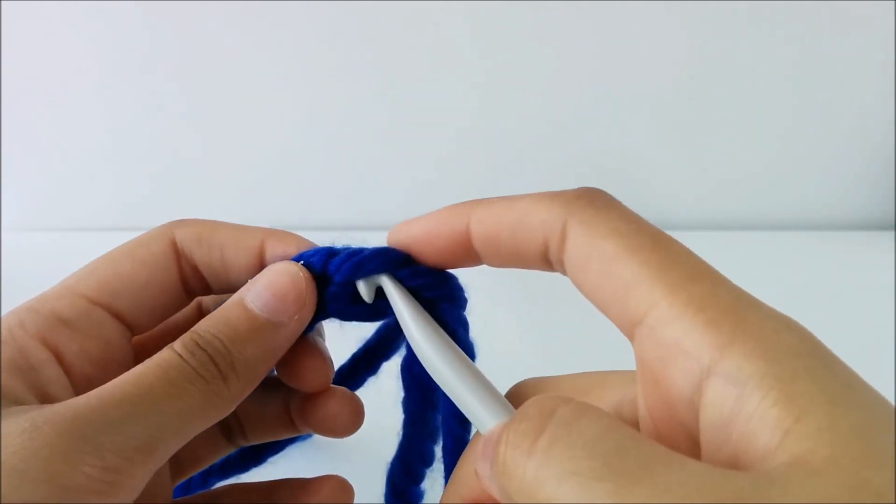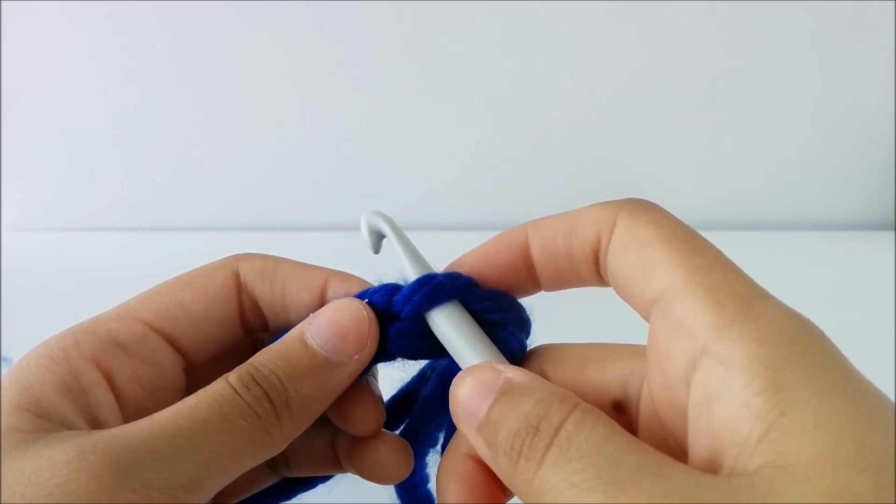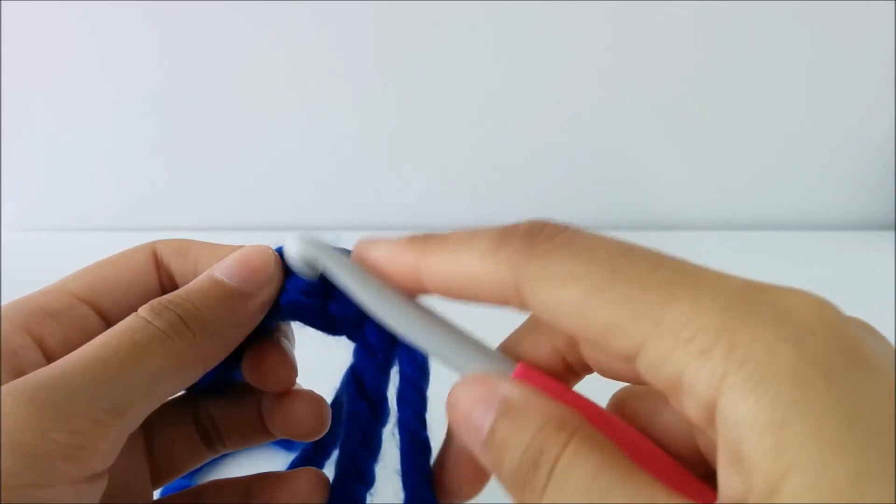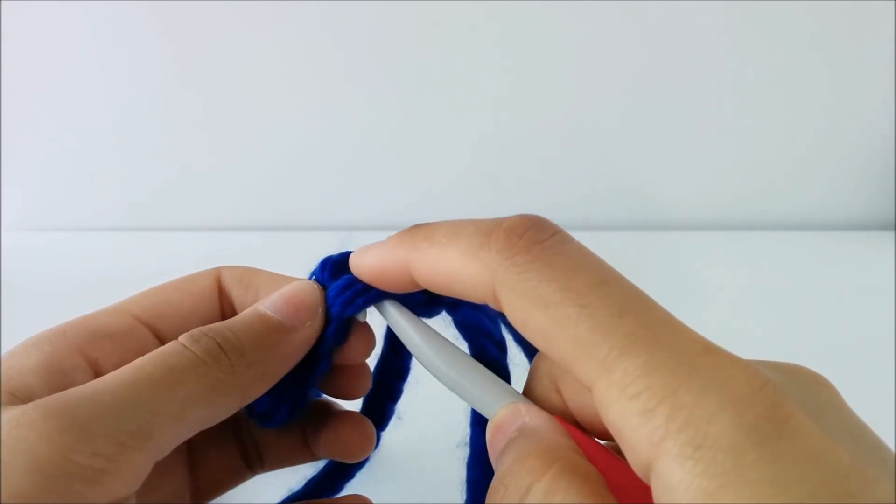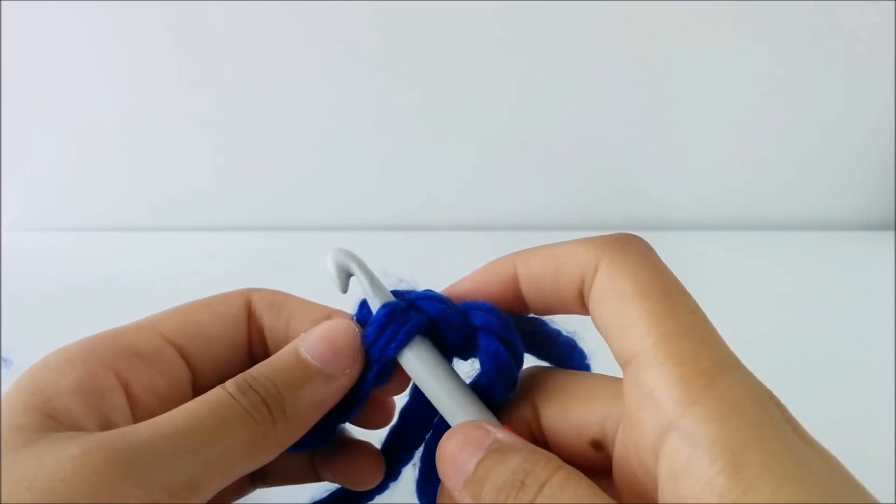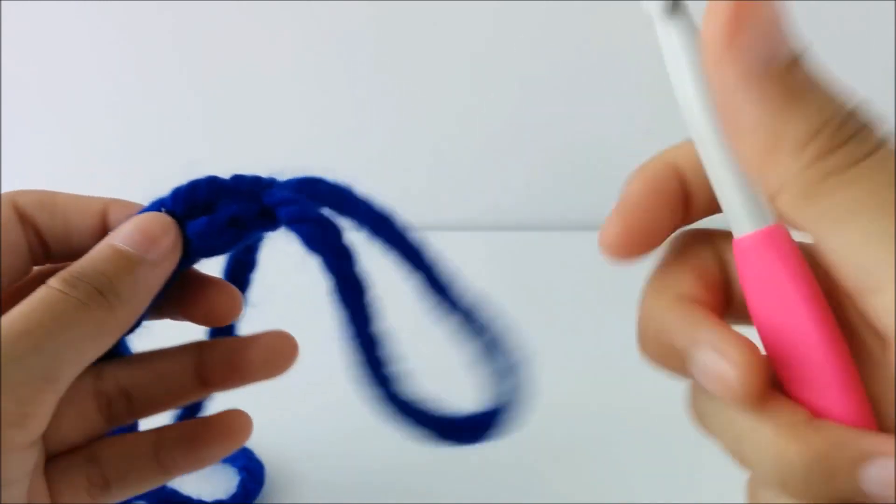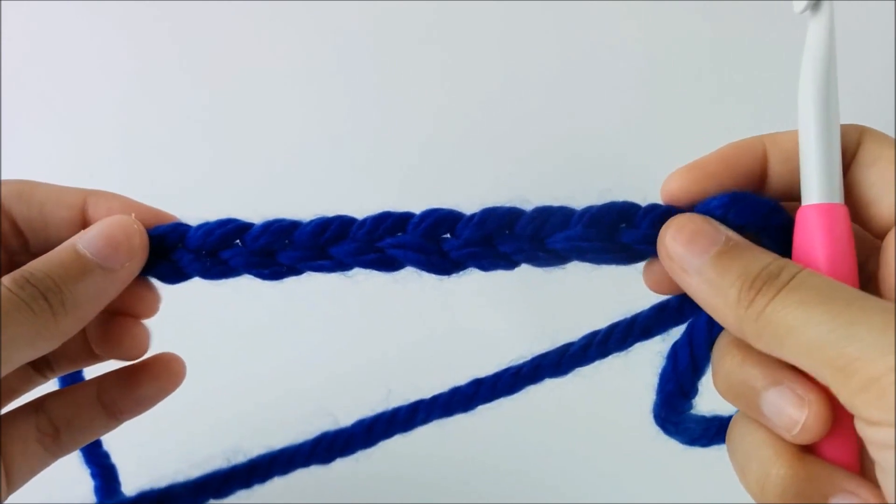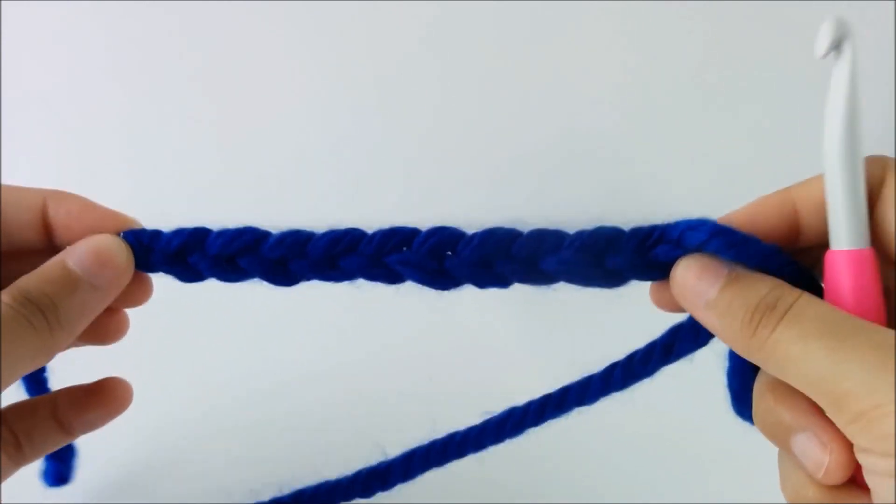Other times, you're only going to be going under the back loop only, or through the front loop only. Your pattern will tell you which one to do, but here is the first ten chains.